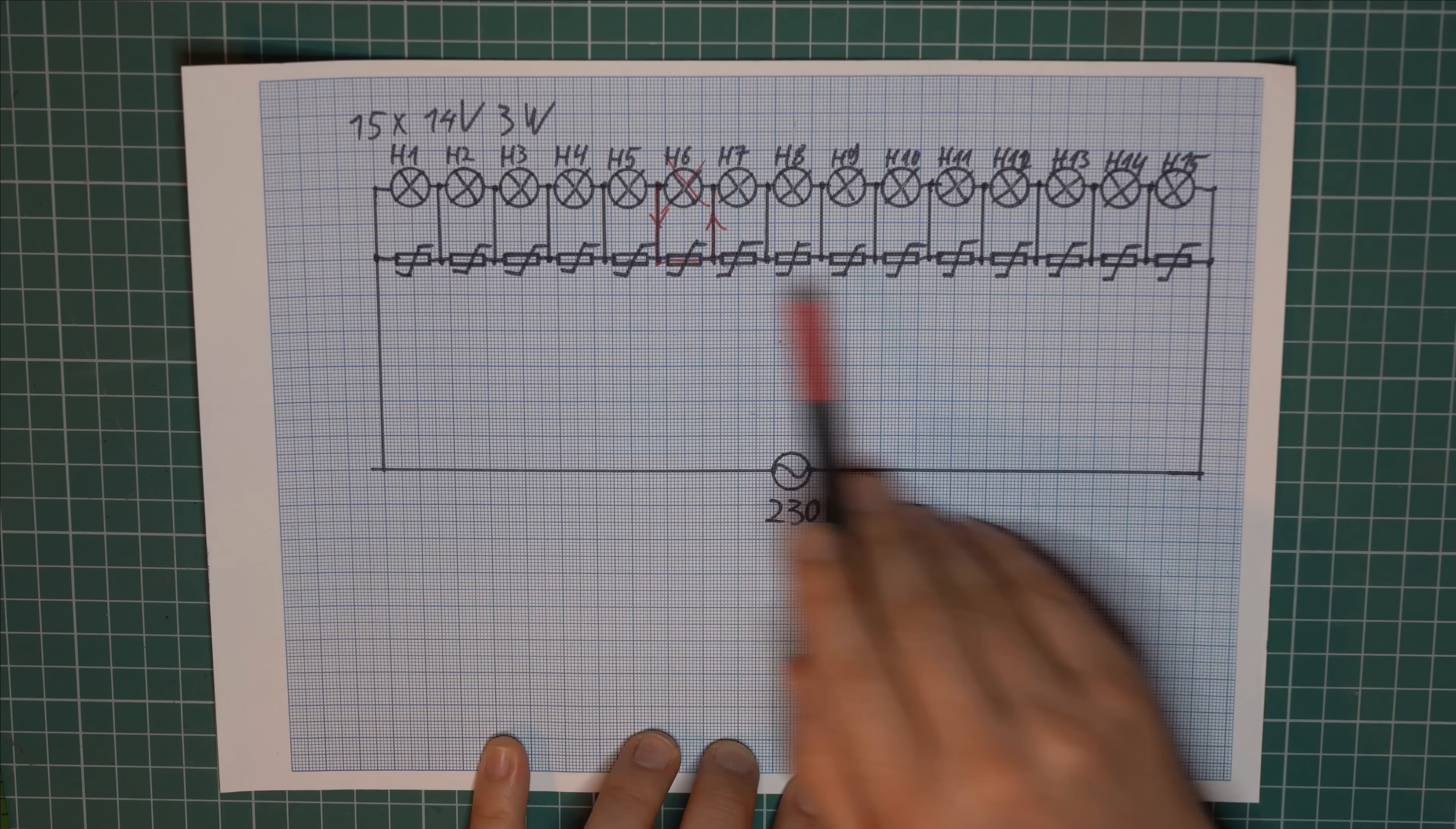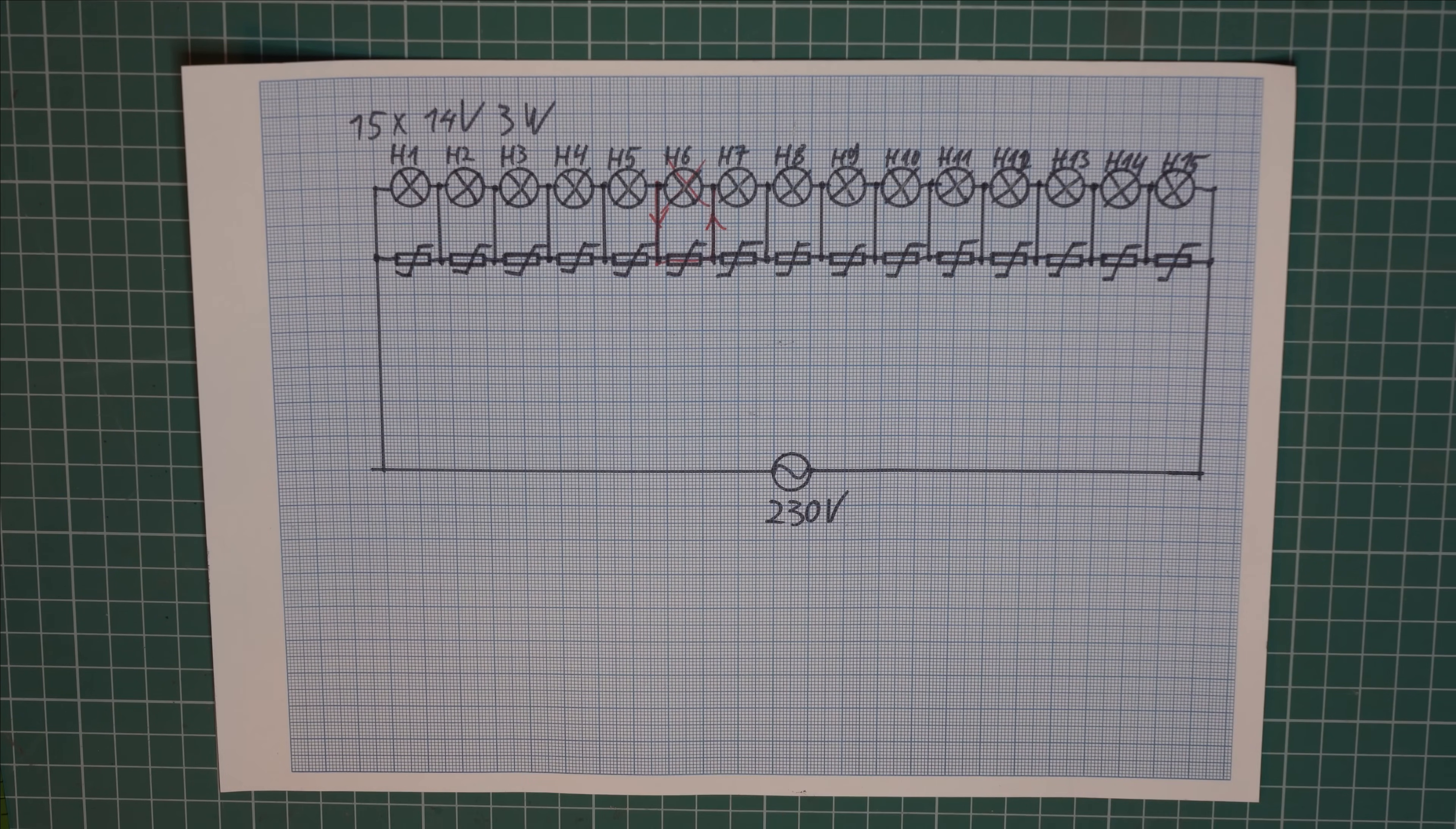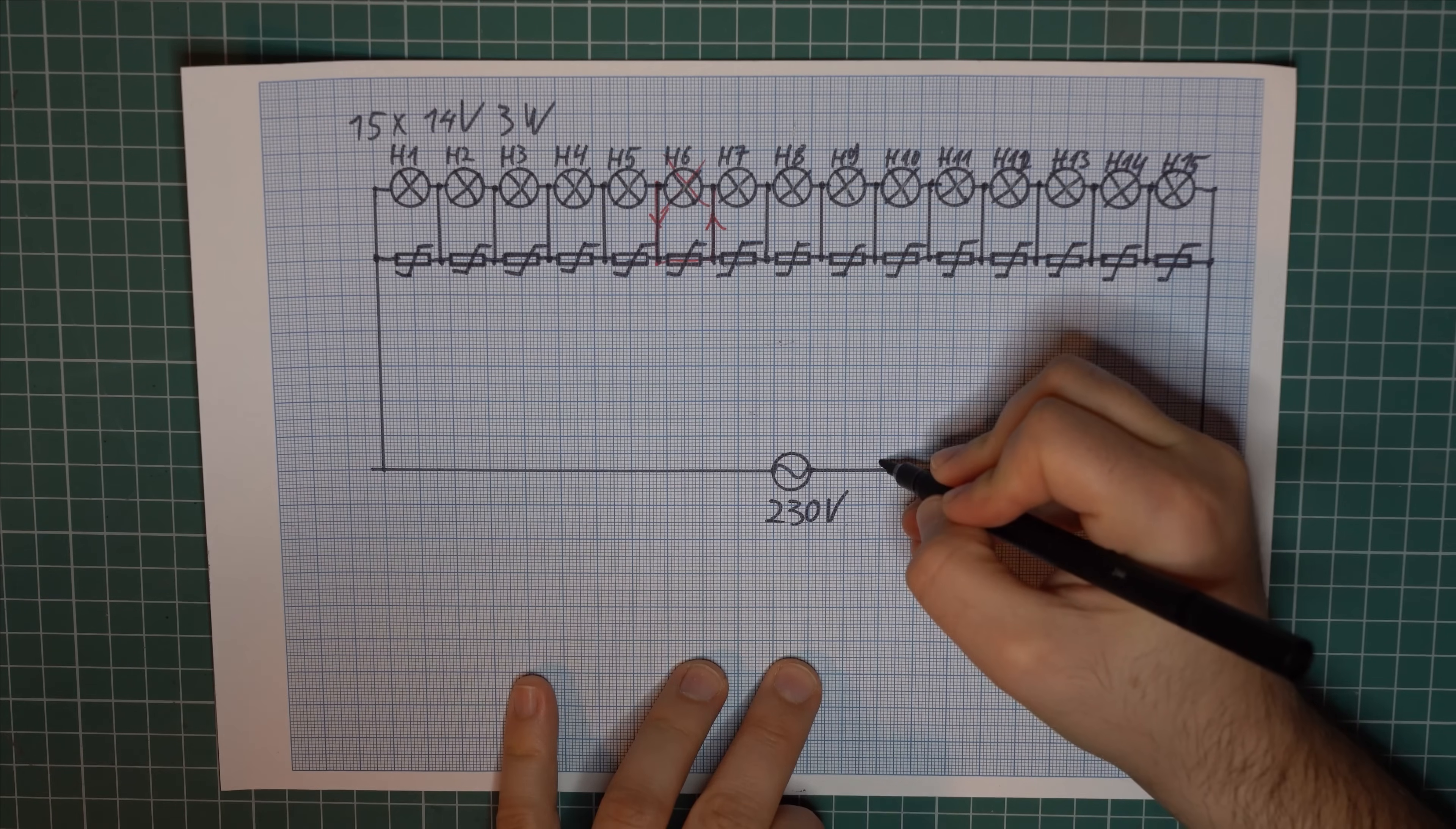They will all be bypassed by the varistors until all the varistors are basically shorted and then you get a dead short across the mains, which is really something you want to avoid. That's why some of these lights actually say that you have to replace the broken bulbs immediately. But still I think that having varistors in every single light is a really clever solution, assuming you also have a fuse somewhere on the line.